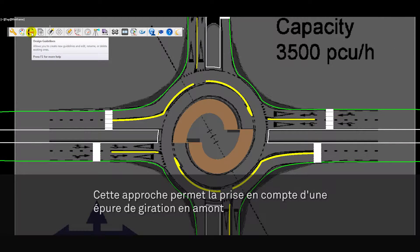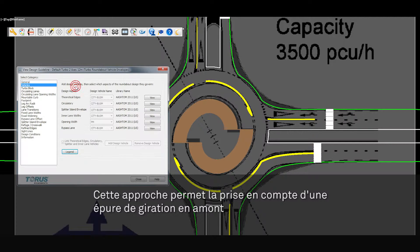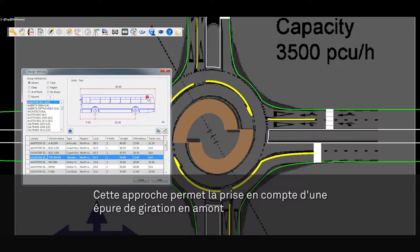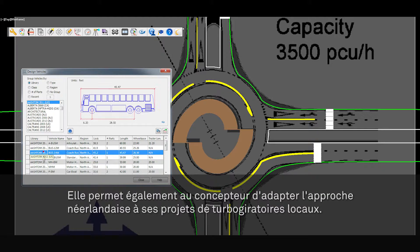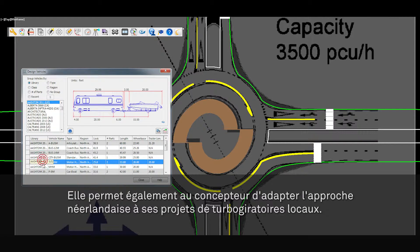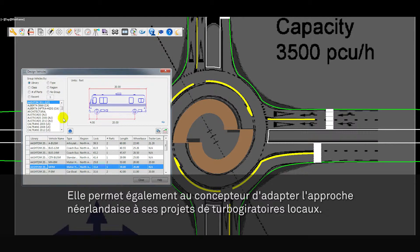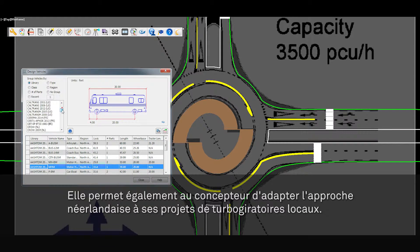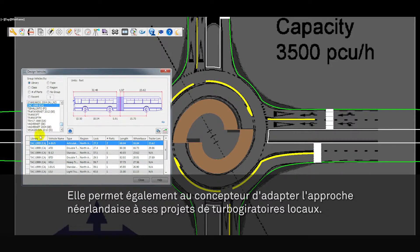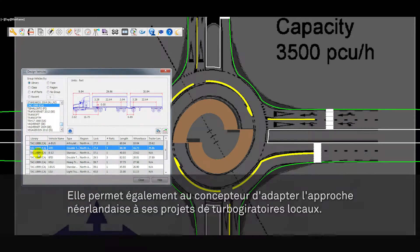which are designed based on the vehicle swept path envelope. This approach enables the consideration of a design vehicle swept path requirement up front. It also allows the designer to regionalize the Dutch approach of turbo roundabouts to accommodate regional design vehicles, for example AASHTO and TAC.